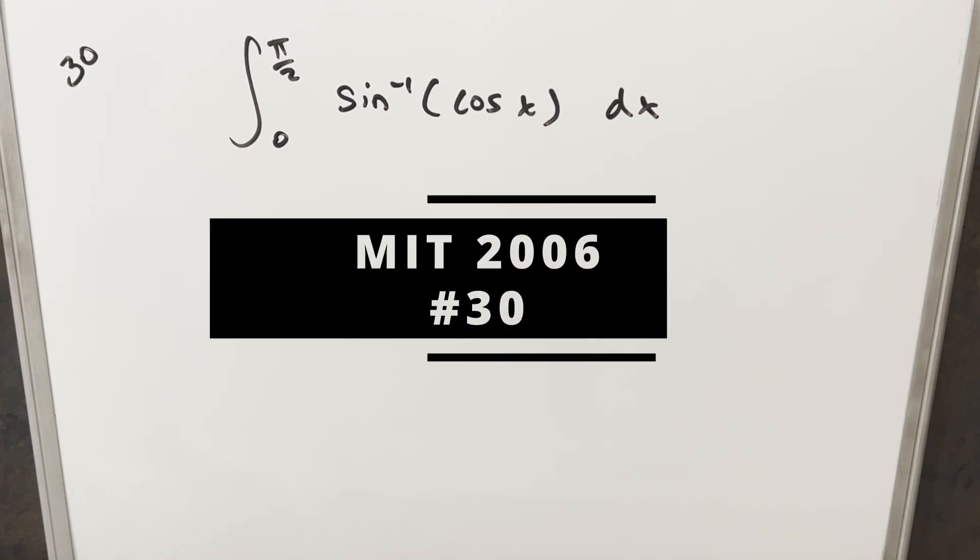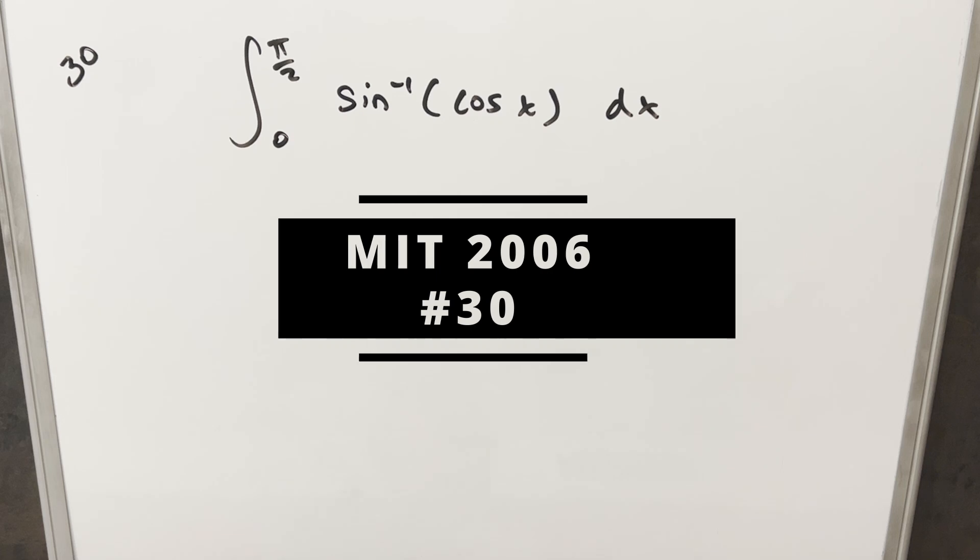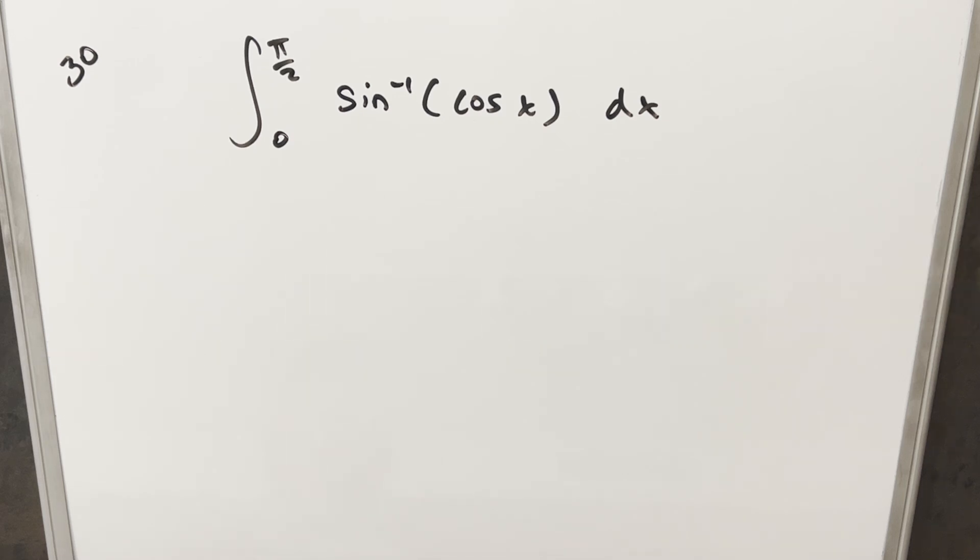Okay, we're going to do a really quick integral from the MIT Integration Bee 2006. This is problem 30. We have the integral from 0 to π/2 of arcsin(cos x) dx.